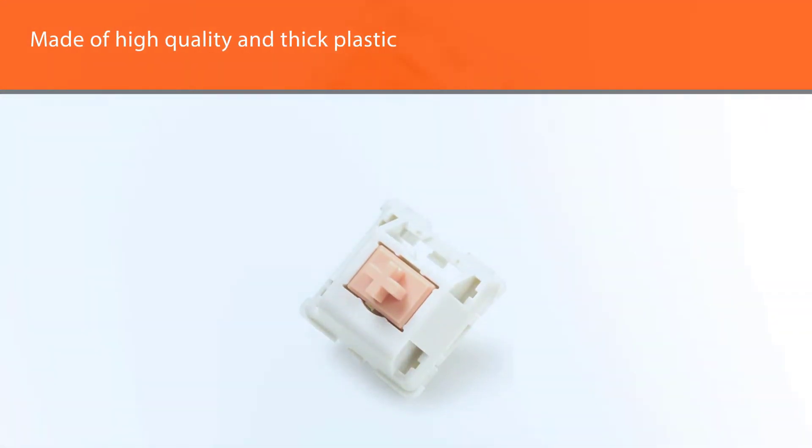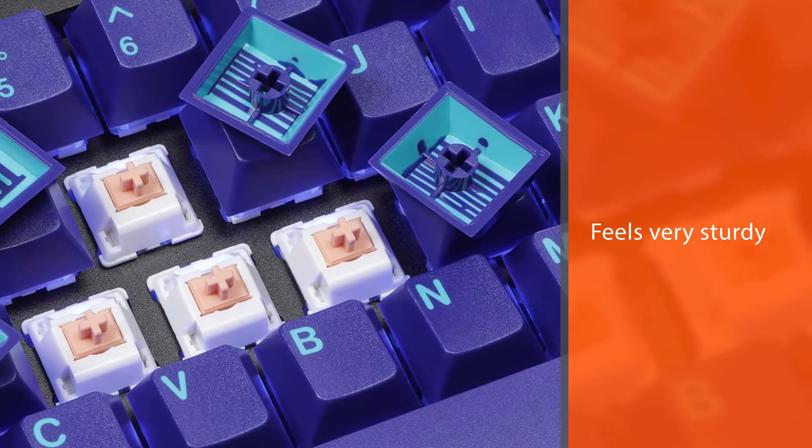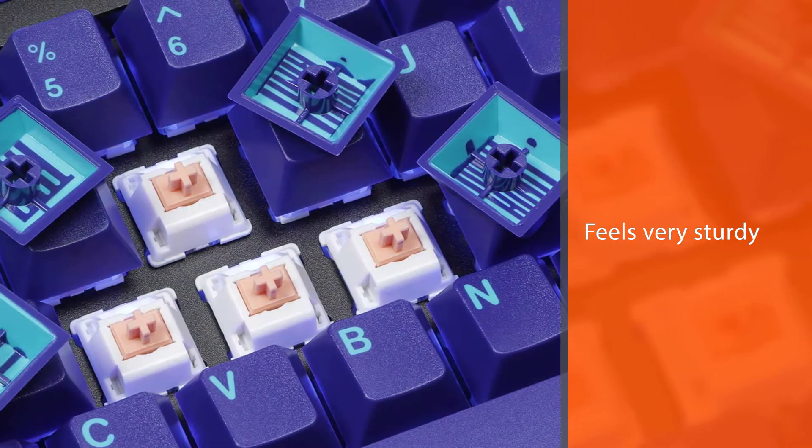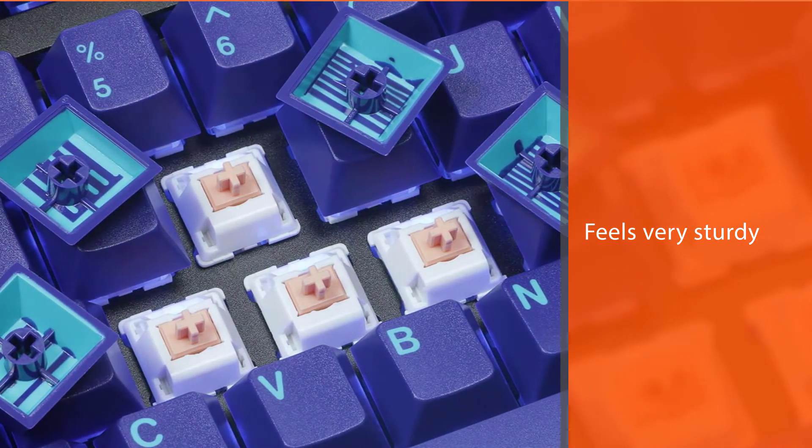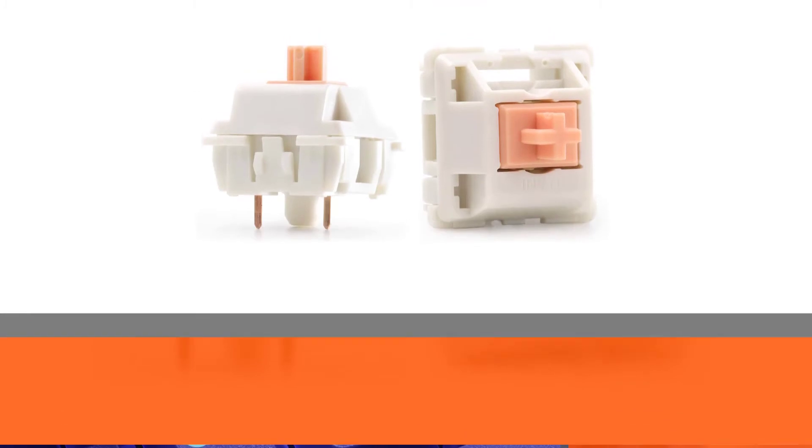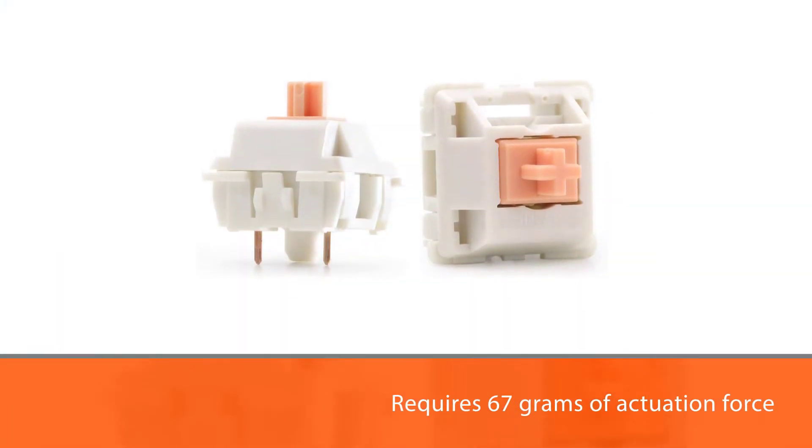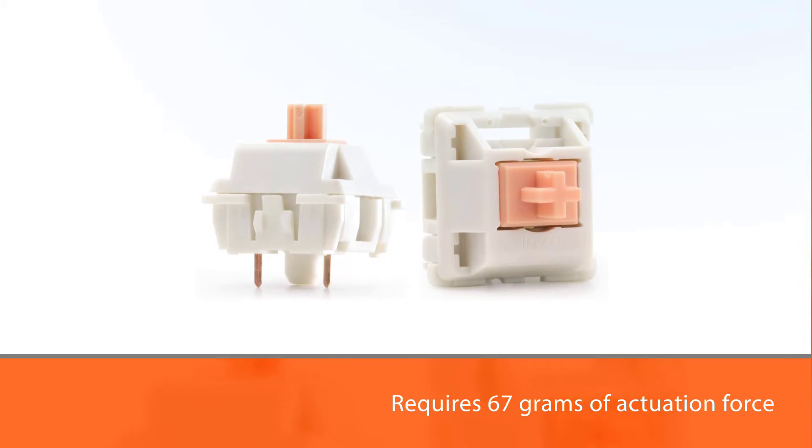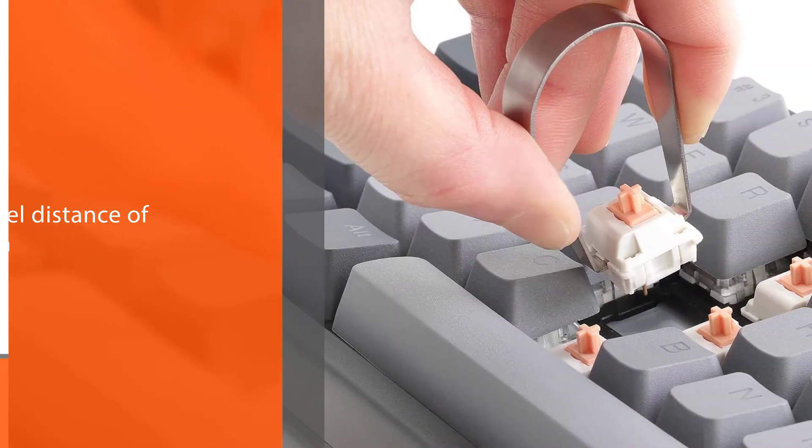The stem on Drop Plus Envir Holy Panda is pink with a milky white switch housing. For operation, it requires 67 grams of actuation force with a travel distance of 4mm. The resulting typing feedback is quite bumpy and smooth with a fairly long, talky typing sound.